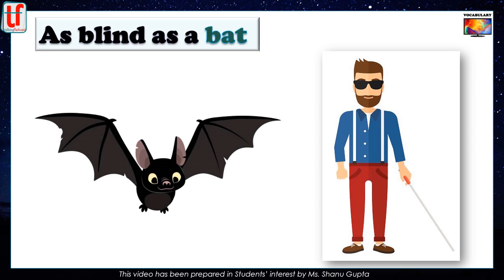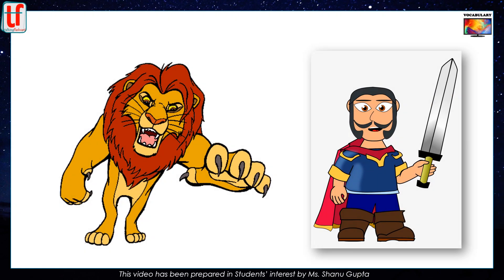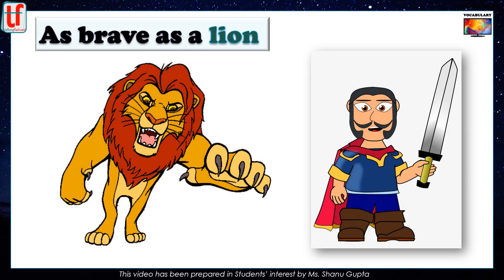As blind as a bat. Supposedly bats are animals which cannot see, so the simile means completely blind. I can say that man holding a stick and wearing black glasses is as blind as a bat. As brave as a lion. The lion, king of the jungle, is very brave. So if we say someone is as brave as a lion, it means he is very brave.